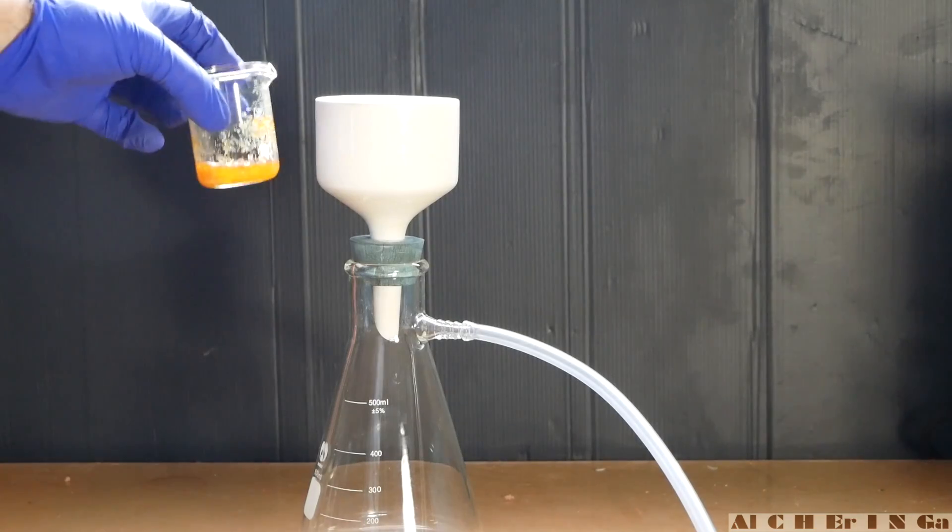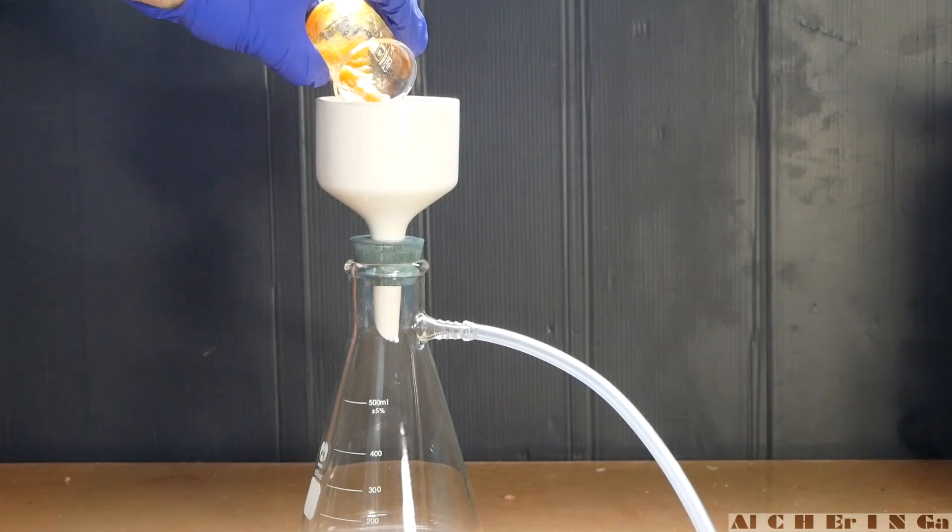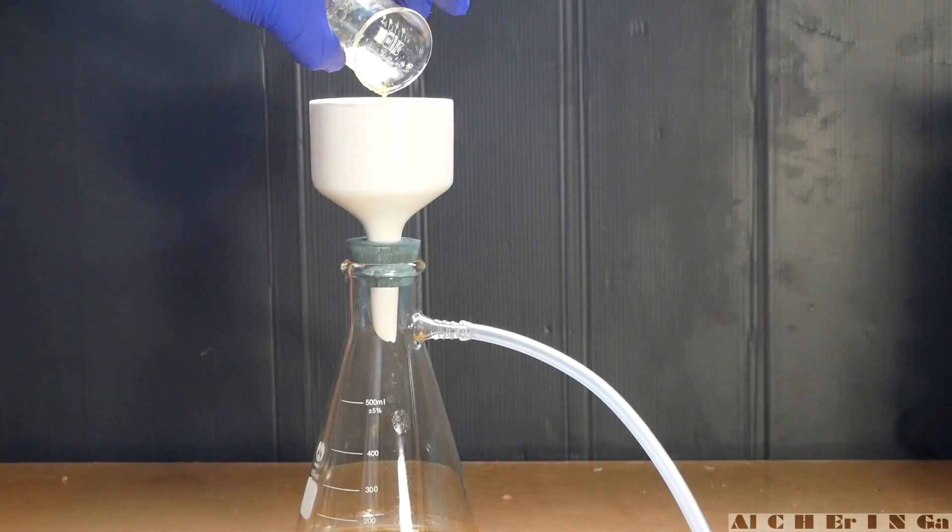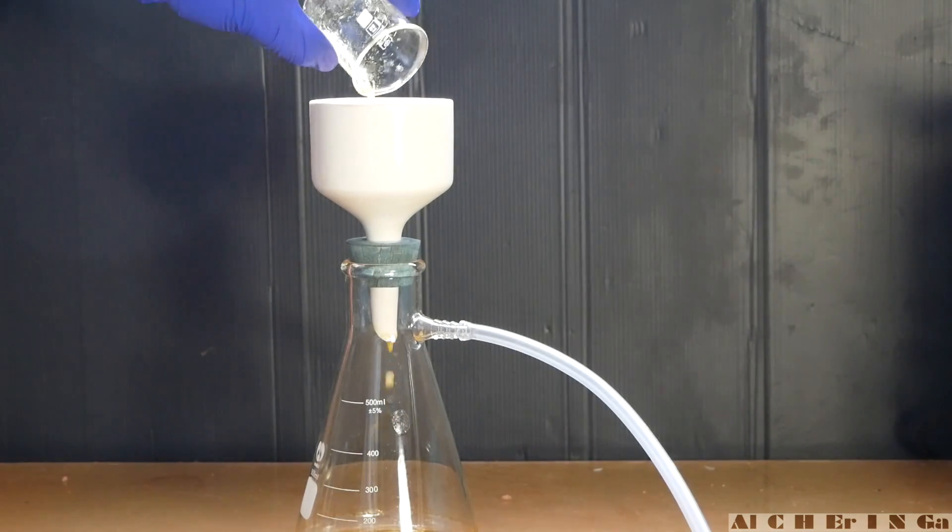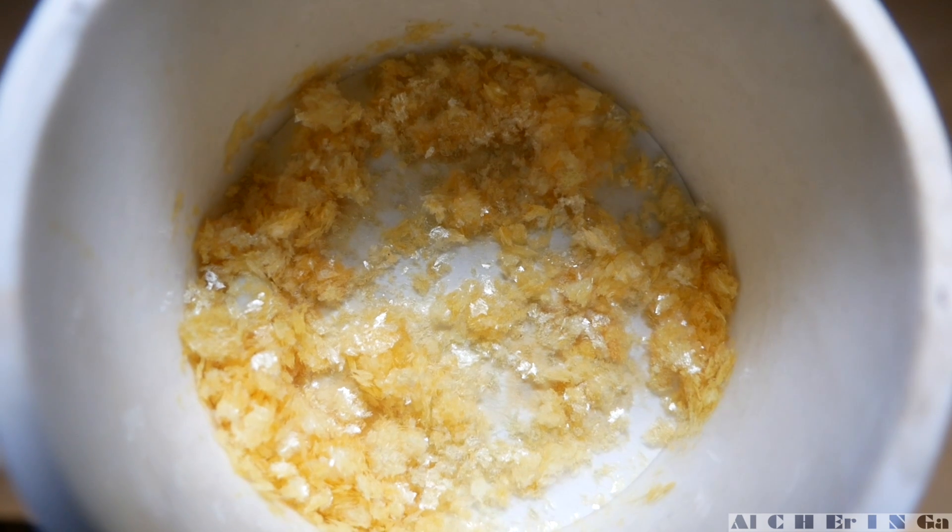Get the crude 1-phenyl-2-nitropropene and carry out vacuum filtration. In order to get the remaining crystals out of the beaker, add a small amount of cold ethanol, swirl and pour the contents into the Buchner funnel. Leave the crystals to dry on the pump for a few minutes.